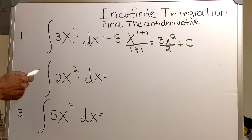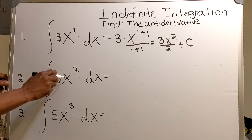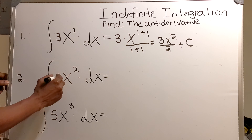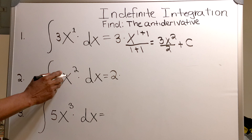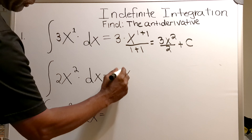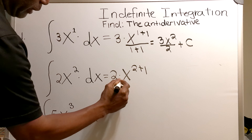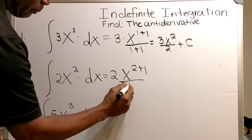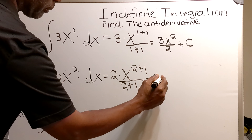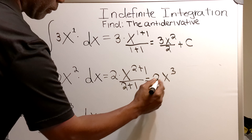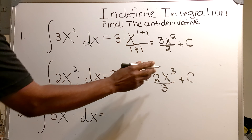Now I'm asking myself what is 2x squared a derivative of. I'll bring the 2 out, then I'll multiply the 2 by the antiderivative of x squared. Then you add 1 to the 2, and divide by 2 plus 1. That gives you 2 times x cubed over 3 plus c, the constant of integration.